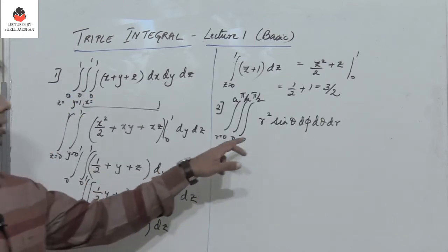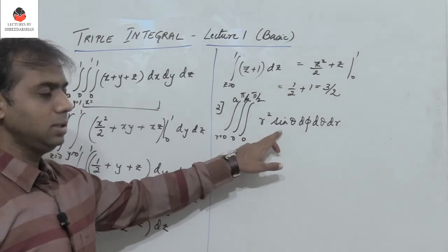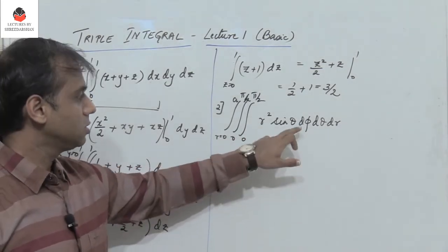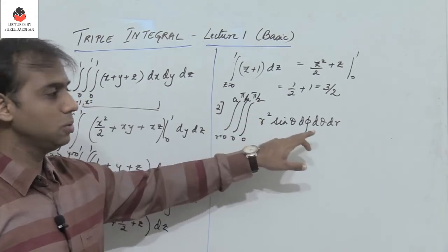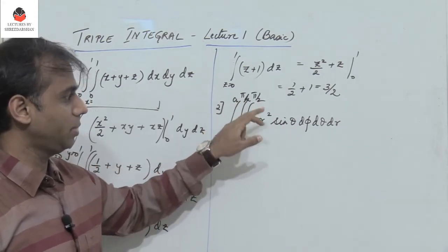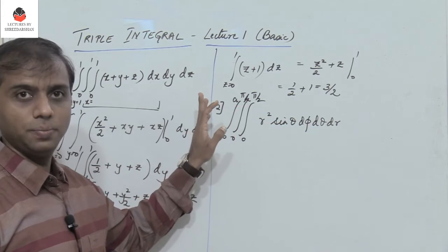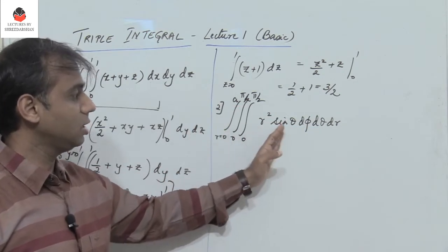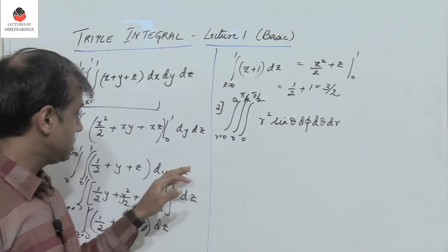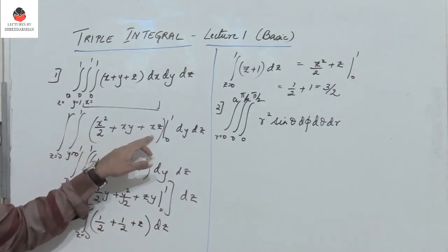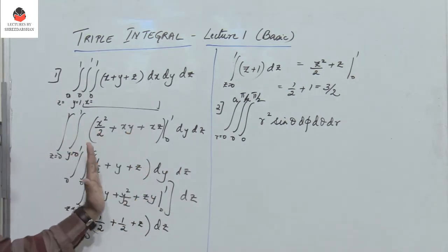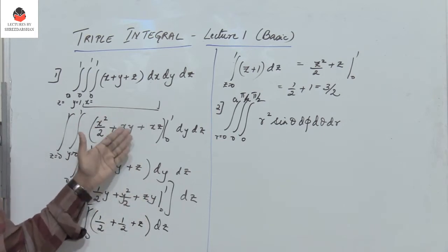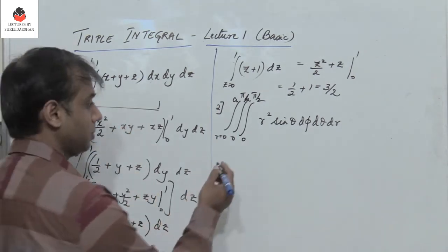Problem 2: Integrate r² sinθ dφ dθ dr, where φ varies from 0 to π/2, θ varies from 0 to π/2, and r varies from 0 to a. Notice that we can integrate all three parts separately here, unlike in Problem 1 where x appeared in all three terms and we had to integrate and substitute step by step.